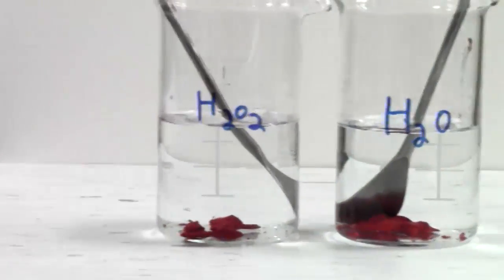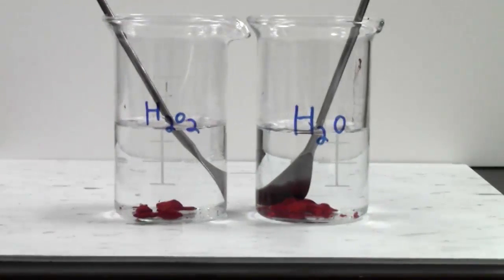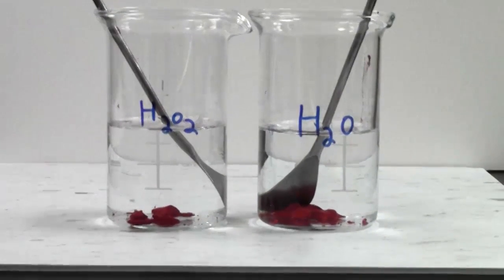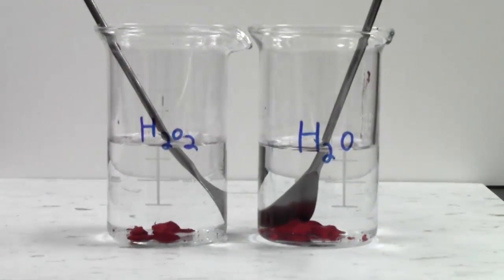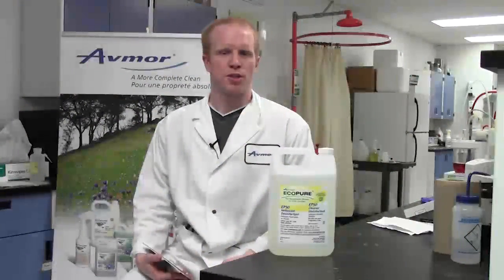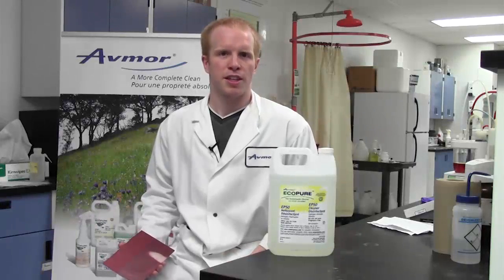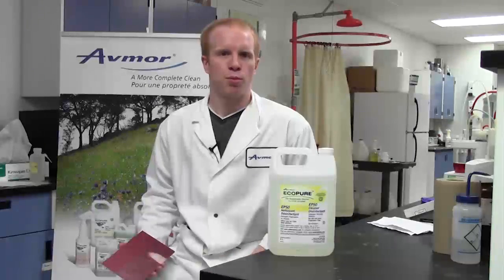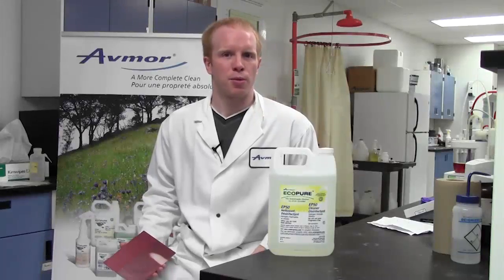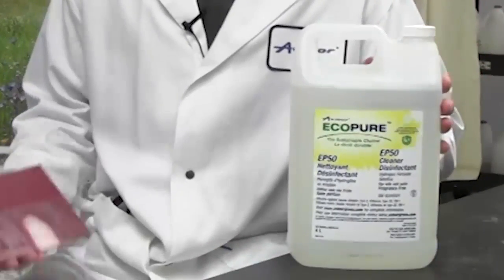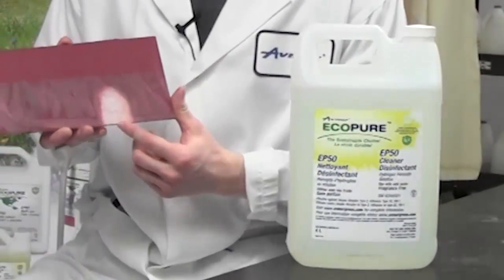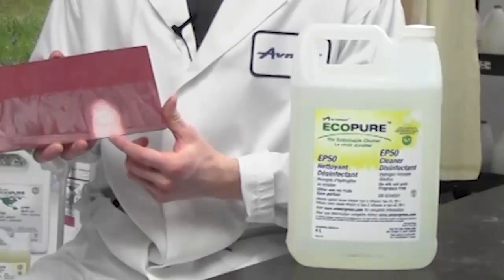This is how hydrogen peroxide participates in the removal of soils in specialized cleaning. As demonstrated, on particularly tough soils, hydrogen peroxide can loosen it, but cannot remove it entirely on its own. In combination with other cleaning ingredients, products such as EP50 can remove even the toughest soils very well.